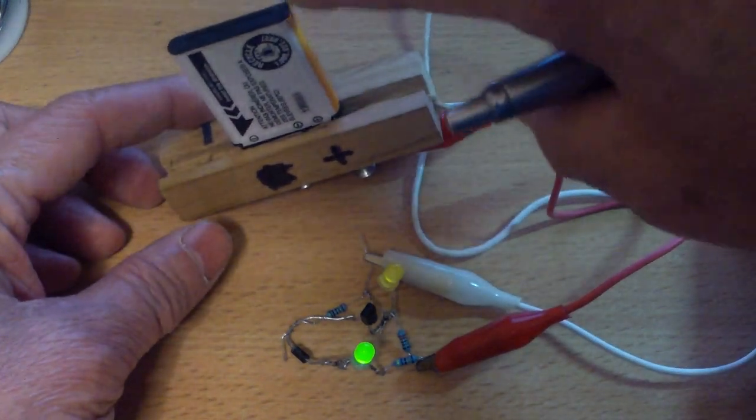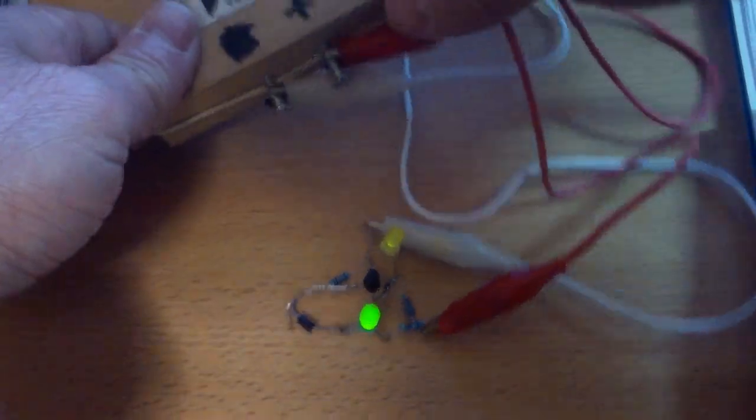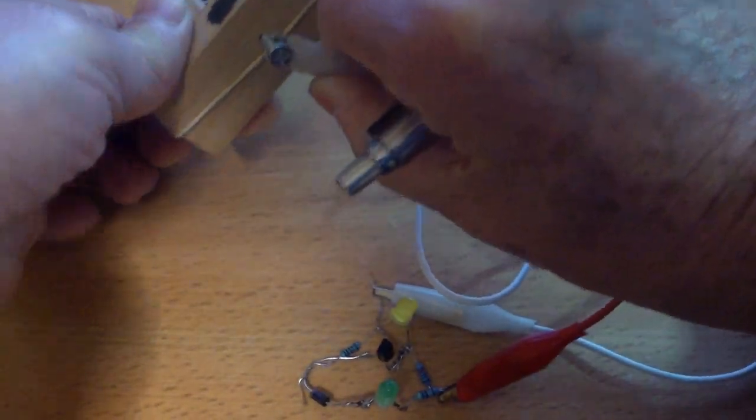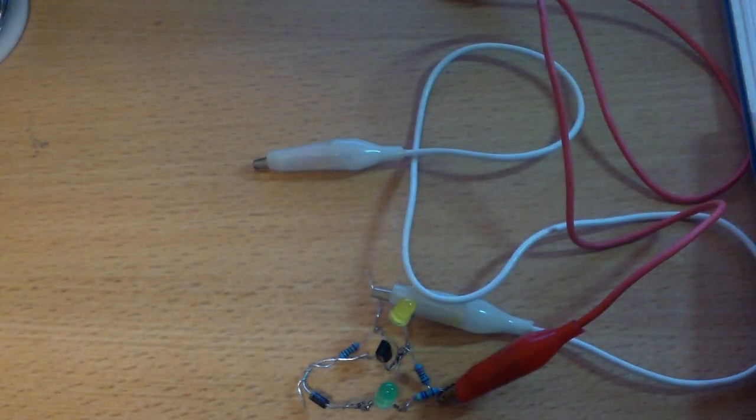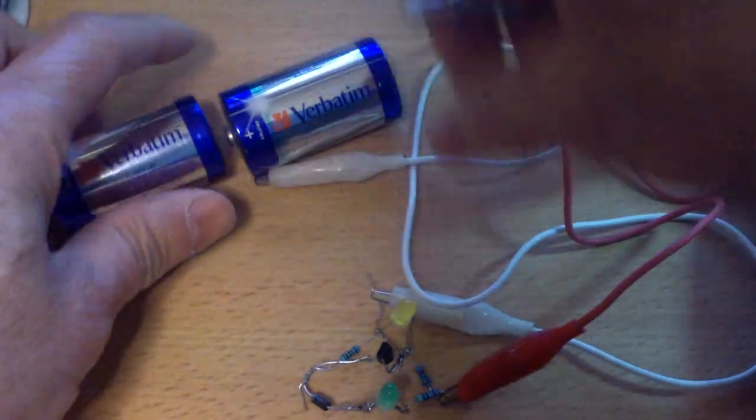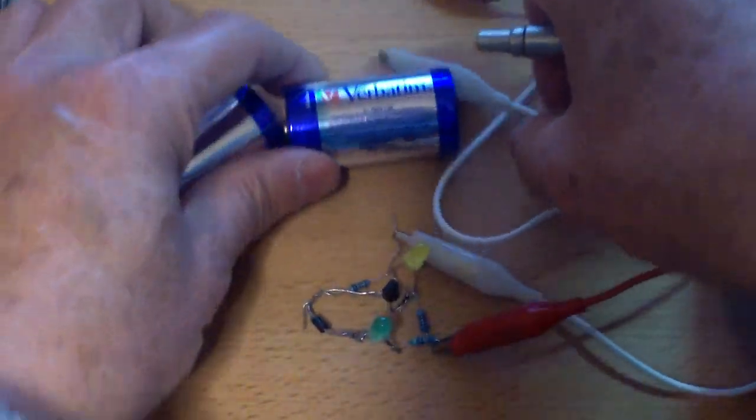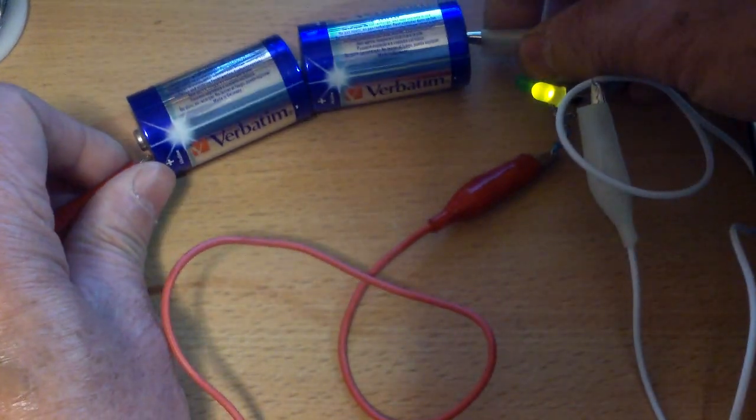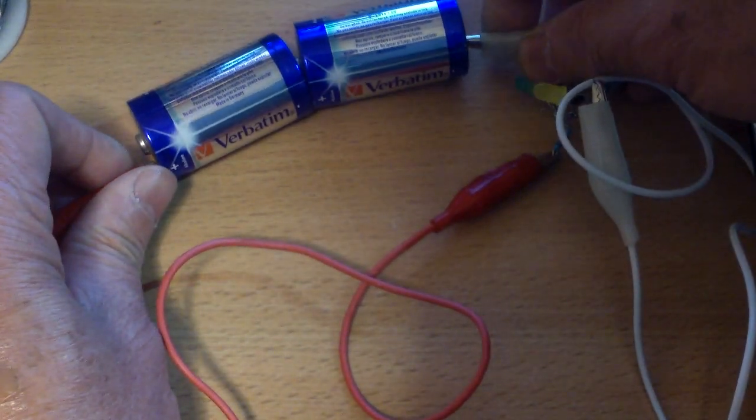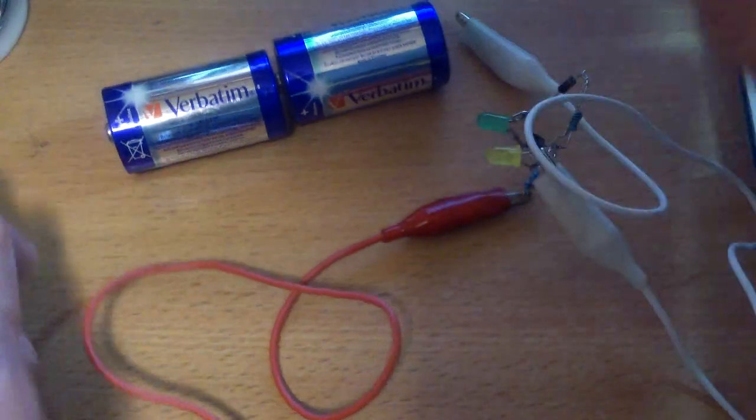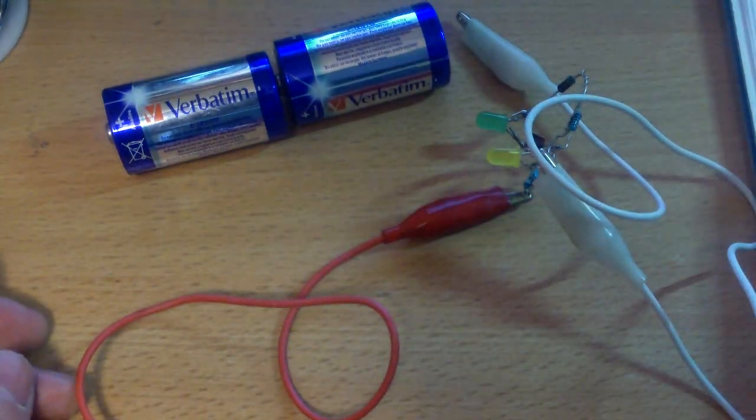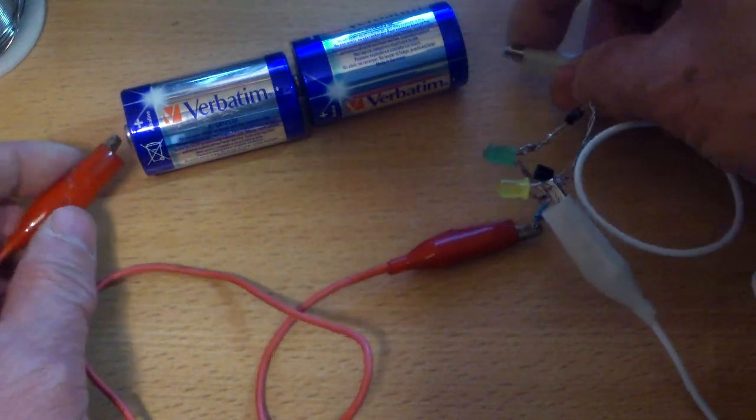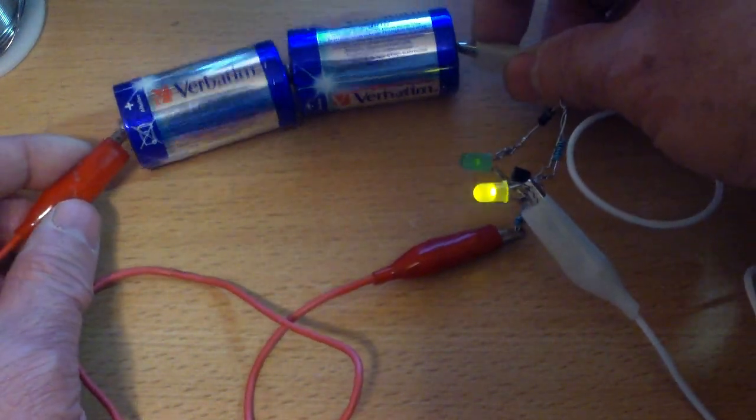So this is the lithium-ion battery and I'm going to show you now. I have two D-cell batteries here to knock the voltage of the lithium-ion battery and the green light will go out and then the yellow light will go on.